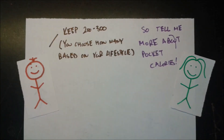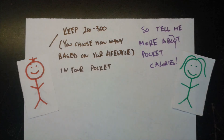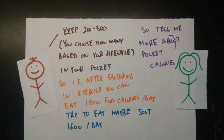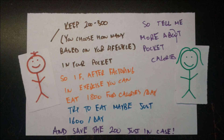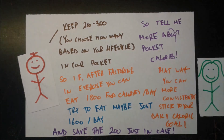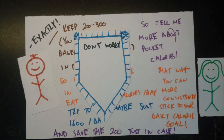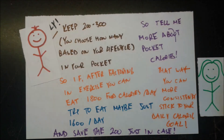Pocket calories are 200–300 calories you keep in reserve based on your lifestyle. If you can eat 1,800 a day, aim for 1,600 and keep 200 in your pocket in case something comes up — that way you can more consistently stick to your daily caloric goal. And if someday you miscalculate and eat too much, don't worry — keep calm and get back on track.